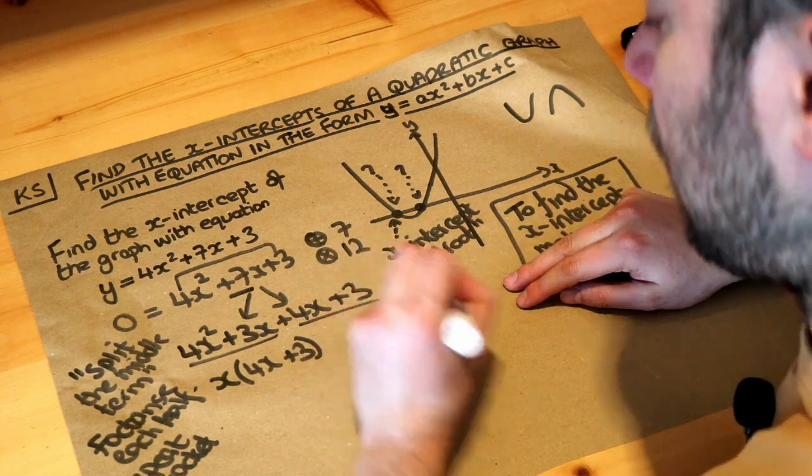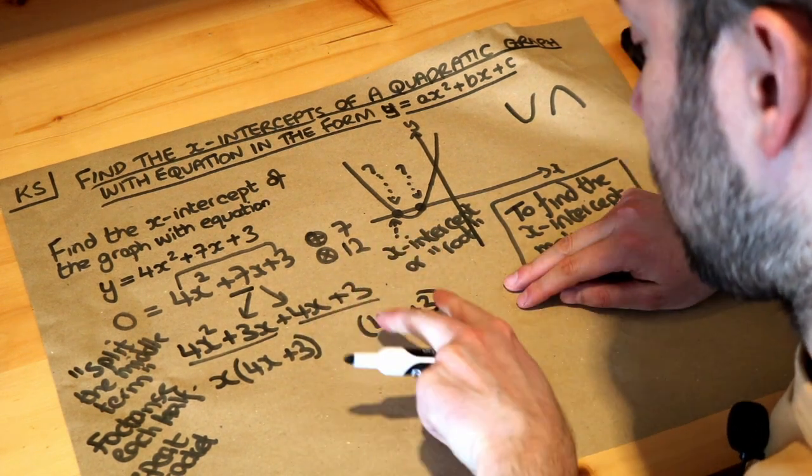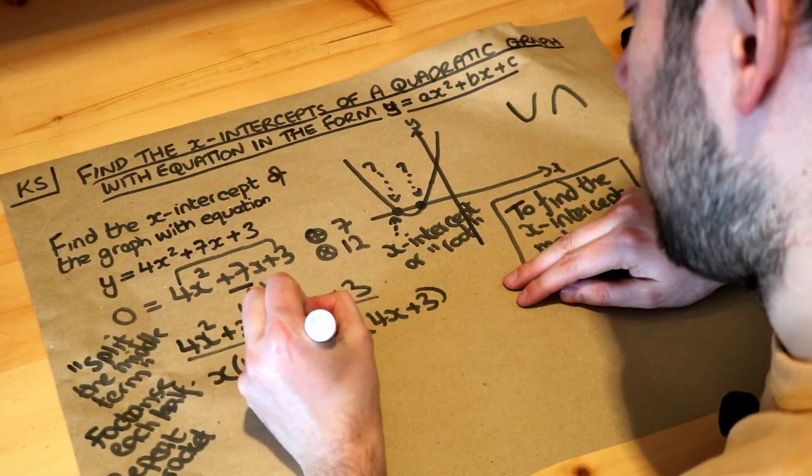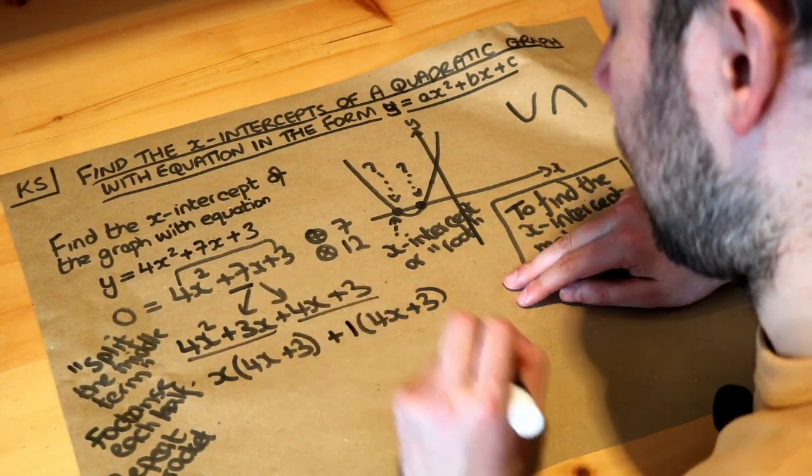I'm going to duplicate it and then you think what goes in the middle? What times 4x plus 3 is 4x plus 3? Well it's just 1, isn't it? And don't forget to put the plus in front of it if it's a positive number.